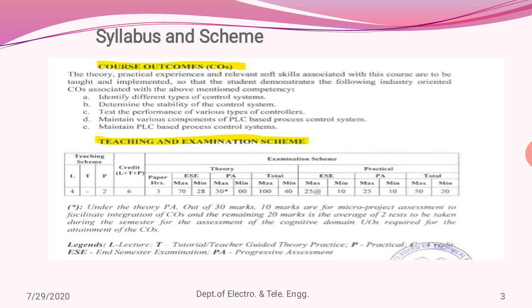The course consists of five defined course outcomes. Firstly, we'll identify different types of control systems. Second, we'll determine the stability of control systems. Third, we shall test the performance of various types of control systems. Fourthly, we'll look into how to maintain various components for a PLC-based processor control system, and finally learn how a PLC-based processor can be maintained.